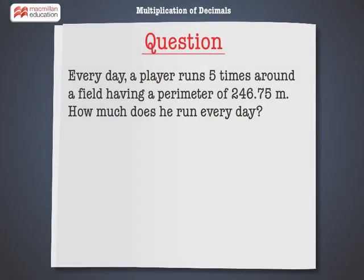Read the number story and solve the problem. Every day, a player runs 5 times around a field having a perimeter of 246.75 meters. How much does he run every day?